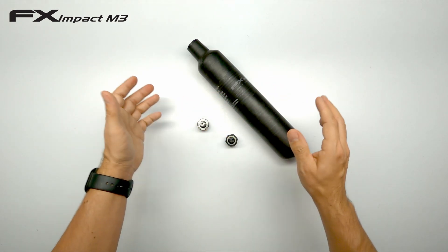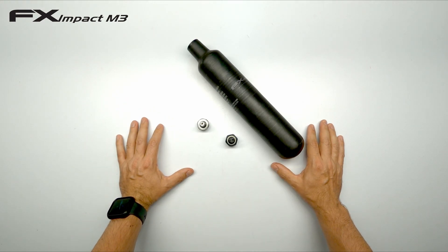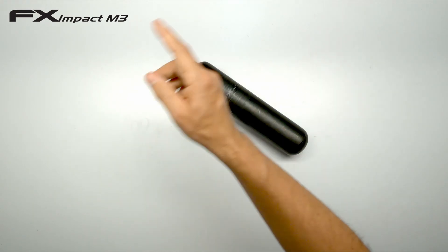Right with that explained let me show you how to convert your Mark II bottle to be able to be used on the M3. Let's do it.